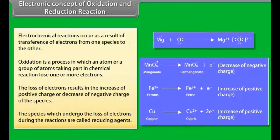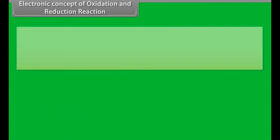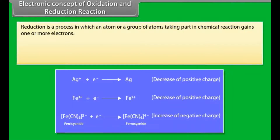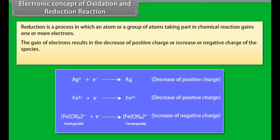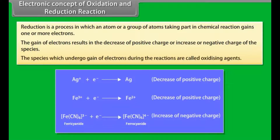The species which undergo loss of electrons during reactions are called reducing agents. MnO₄⁻, Fe²⁺, and CO₂ are examples of reducing agents. Reduction is a process in which an atom or group of atoms gains one or more electrons, resulting in a decrease of positive charge or increase of negative charge. The species which undergo gain of electrons during reactions are called oxidizing agents. Ag⁺, Fe³⁺, and Fe₃⁻ are examples of oxidizing agents.